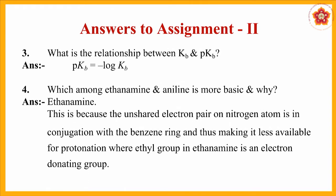The last question: which among ethanamine and aniline is more basic, and why? It has to be ethanamine because it contains an electron-donating group — the CH3CH2 group acts as an electron donor and the lone pair of electrons is freely available for donation. Whereas in aniline, the lone pairs on nitrogen undergo conjugation with the benzene ring, causing delocalization. So the unshared electron pair on nitrogen is in conjugation with the benzene ring and is less available for donation or protonation, while the ethyl group is actually an electron-donating group.